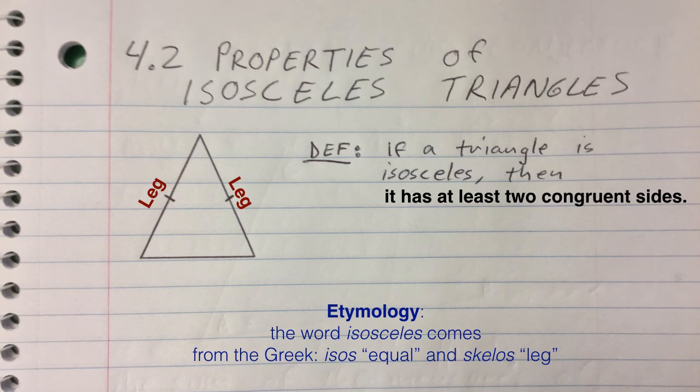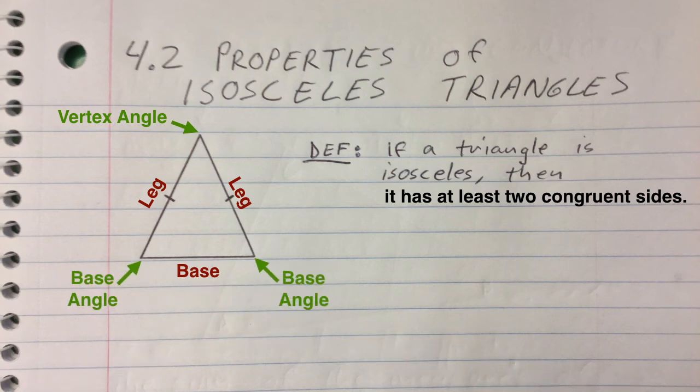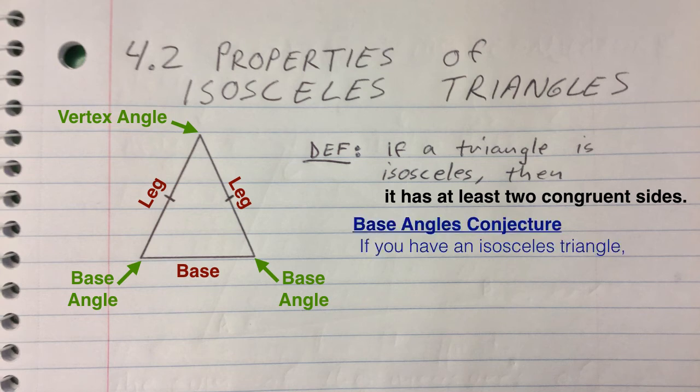The side that isn't a leg is called the base of the isosceles triangle. The angle that connects the two congruent legs is called the vertex angle. The angles that are attached to the base are the base angles. And so that brings us to one of our properties, the base angles conjecture, which says if you have an isosceles triangle then the base angles are congruent.